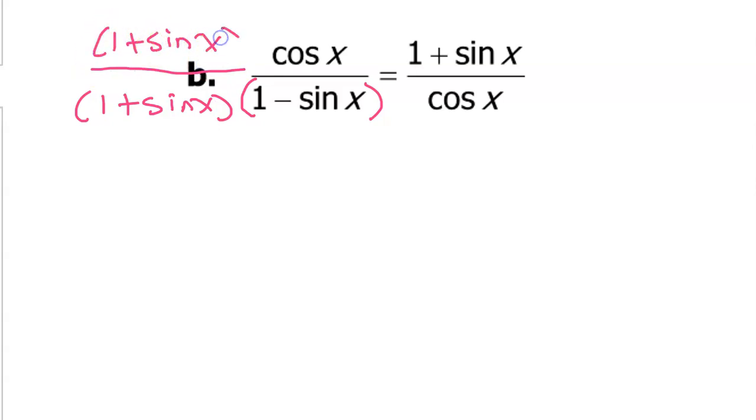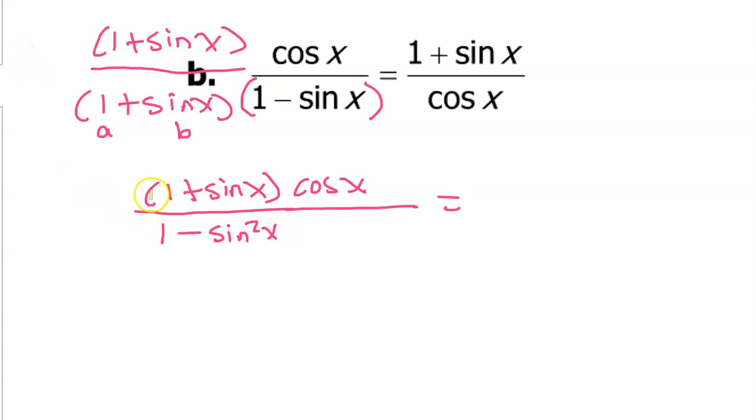So that I'm not really changing the value of the problem. I'm multiplying by one. So remember when you multiply by the conjugate it's really going to turn out to be a squared minus b squared. So this is my a and my b right here. So a squared is going to be one, and my b squared will be sine squared. So this will be the result of multiplying by the conjugate. I think I'm going to leave the numerator the way it is for now. So I've got one plus sine x times cosine x. I'm really liking the fact that I've got one plus sine x right here, and looking at the target there is a one plus sine x. So I feel like I'm heading in the right direction.